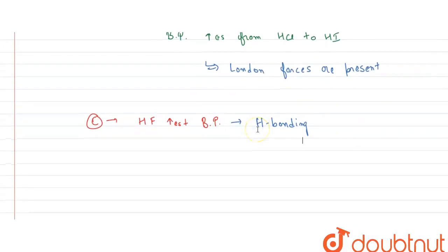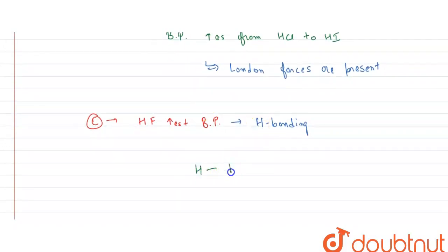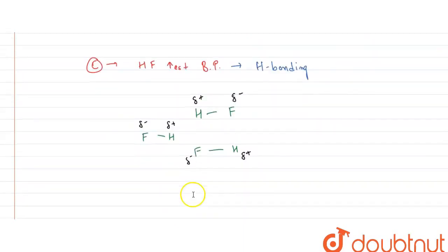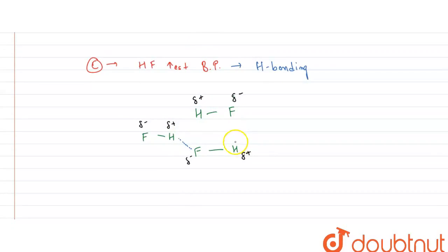So since fluorine is very electronegative, it attracts a lot of negative charge, that is delta-negative charge towards it and giving delta-positive to the hydrogen. So there are other molecules of HF present as well. Let us say this is another molecule of HF, so this will also be having a delta-positive and delta-negative. Similarly, this one also has similar delta-positive and delta-negative. So what will happen is that this positive will attract this delta-negative of fluorine, therefore hydrogen bonding will be possible.